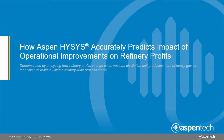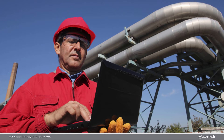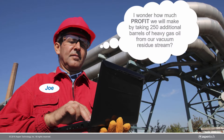This video demonstrates how refinery engineers can accurately predict the impact of potential operational changes on their refinery's profit using Aspen HySys. Let's take the case of a refinery engineer Joe who is considering making some operational changes to his vacuum distillation unit so as to generate more heavy vacuum gas oil at the cost of the vacuum residual stream.